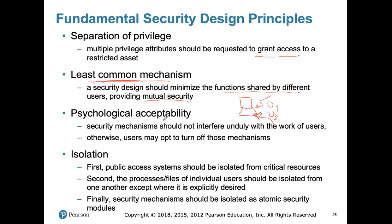Psychological acceptability: your security countermeasures should be psychologically acceptable — easy and pleasant to work with. If they make things unacceptably difficult or complicated, people will simply turn them off and keep working, which defeats your basic goal of making the system secure.